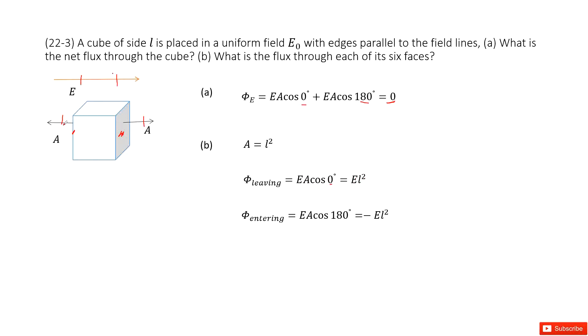When it is entered, so like in this case, the electric field enters this cube. So this angle we just talked about, this angle between these two vectors is 180 degrees. So it becomes negative E·L². Thank you.